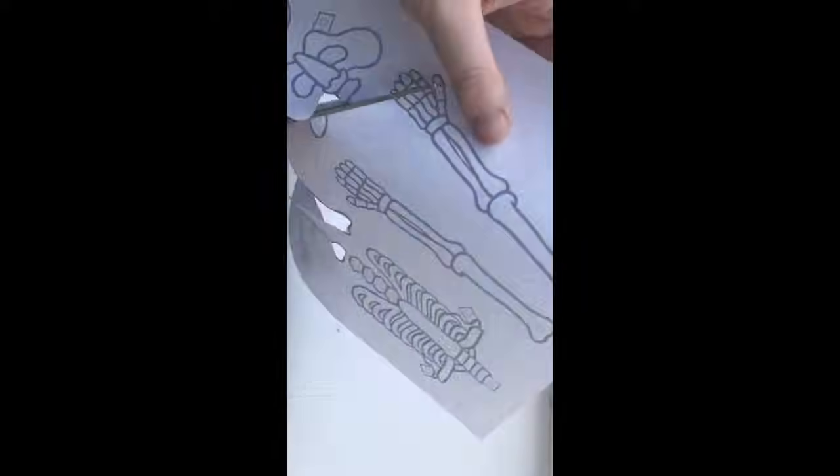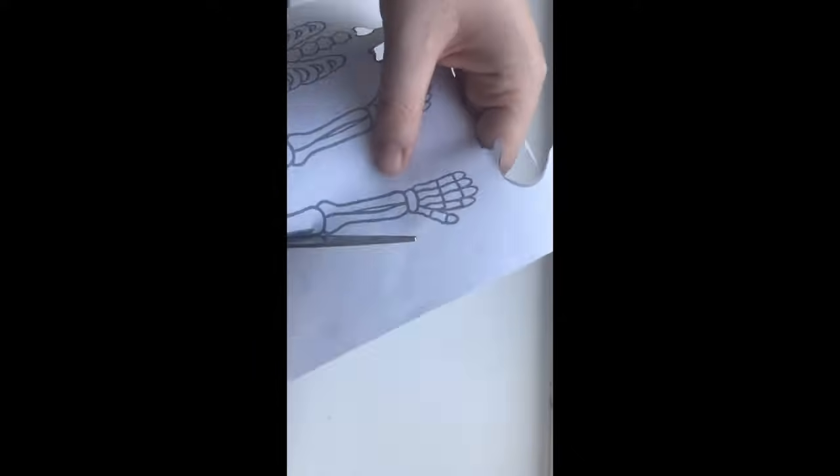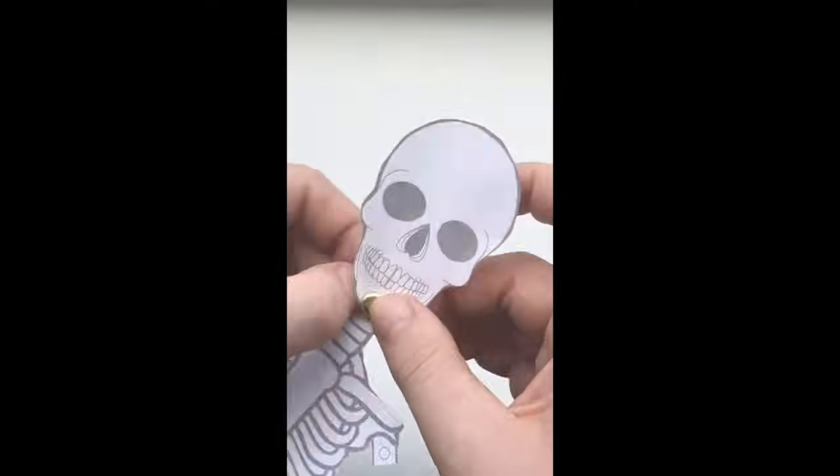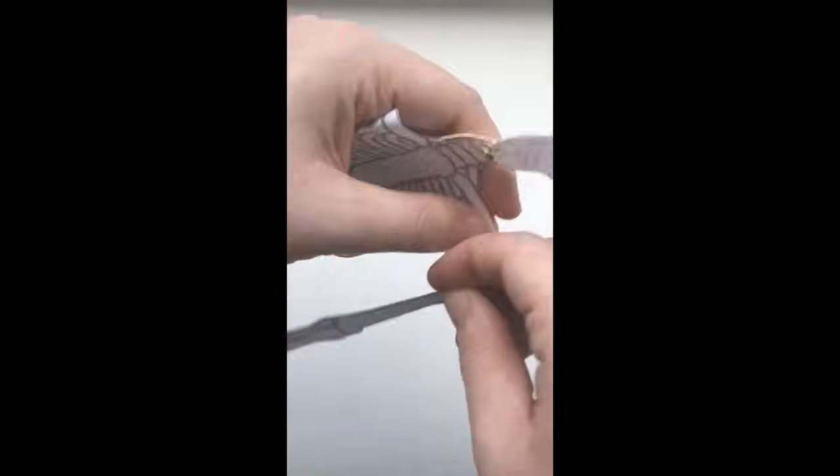Begin by carefully and slowly cutting out each of the bone shapes, making sure that you don't cut off any of the tabs. Now it's time to begin constructing your skeleton. Connect the bones together with split pins, using the tabs to help you.